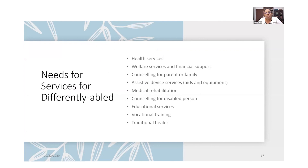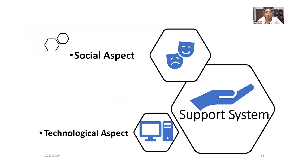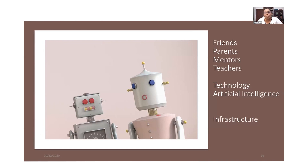The needs for services include health services, welfare services, financial support, counseling for parents or family, assistive device aids, medical rehabilitation, counseling for disabled persons, educational services, and vocational training. Their support systems can be divided into social aspects — friends, parents, mentors, and teachers — and the technological aspect, including technology, artificial intelligence, and infrastructure. If we work on these different aspects, we can help them pursue science as a career.